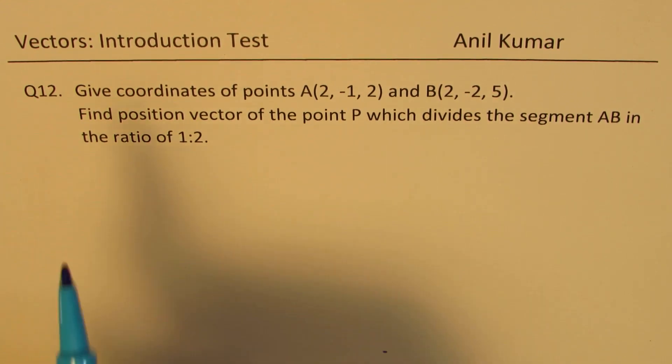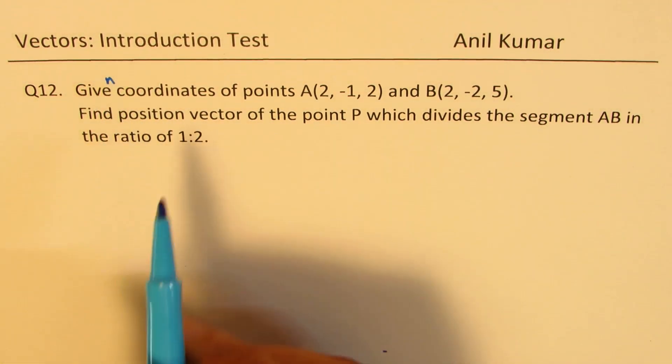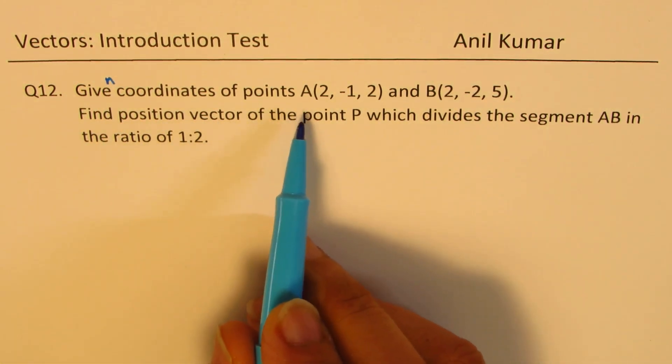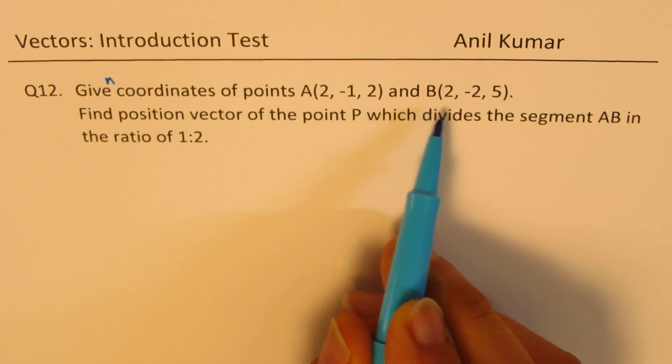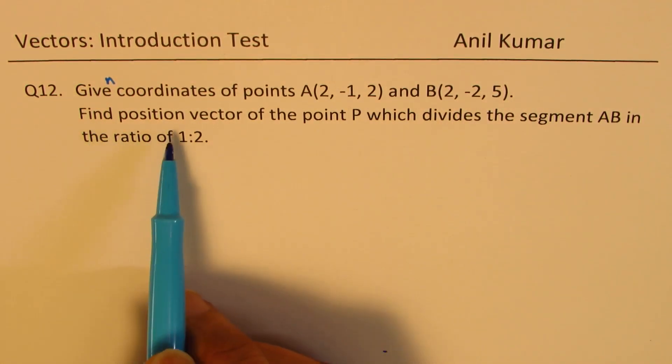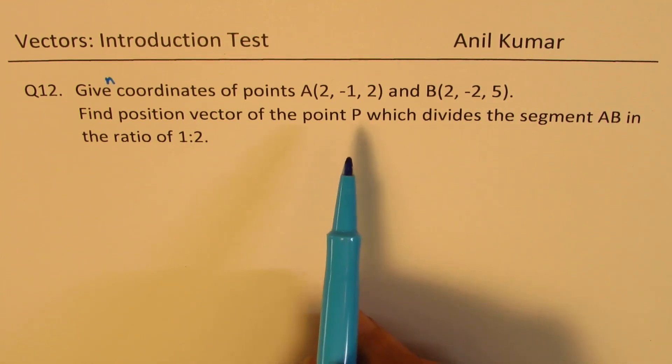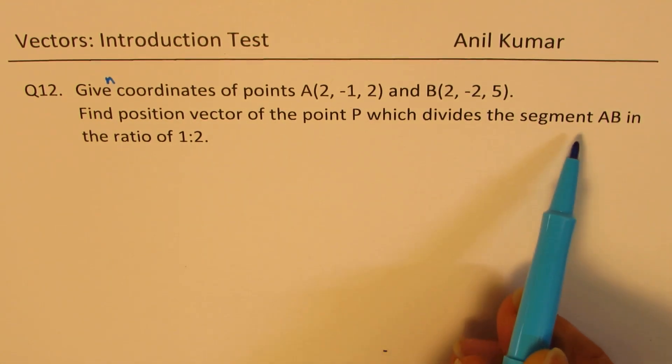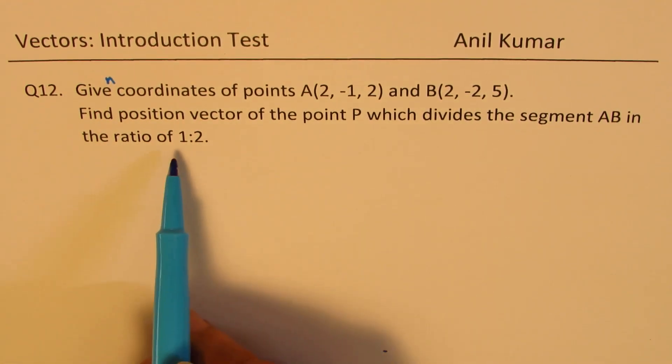Question number 12 here is: given coordinates of points A(2, -1, 2) and B(2, -2, 5), find position vector of the point P which divides the segment AB in the ratio of 1 is to 2.